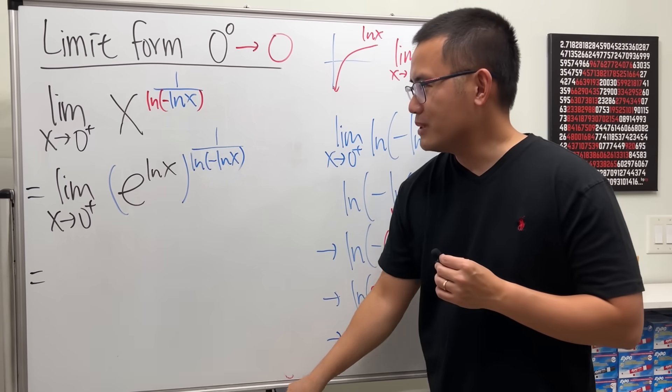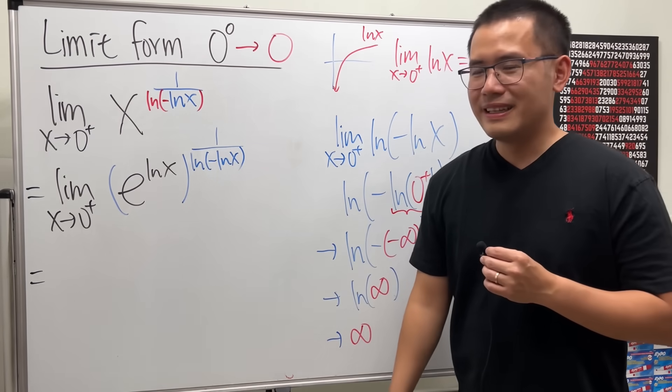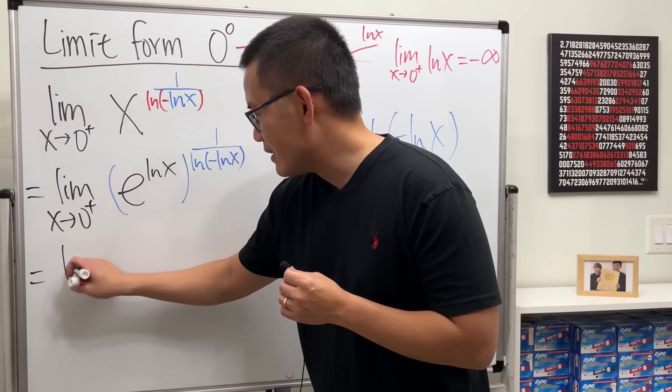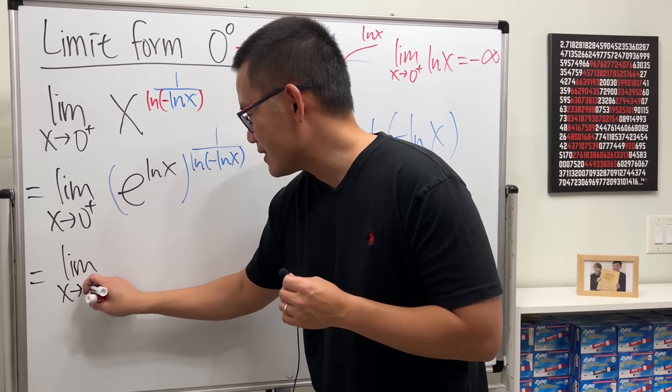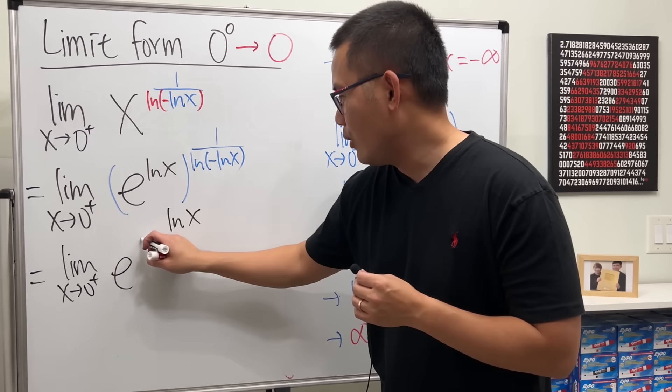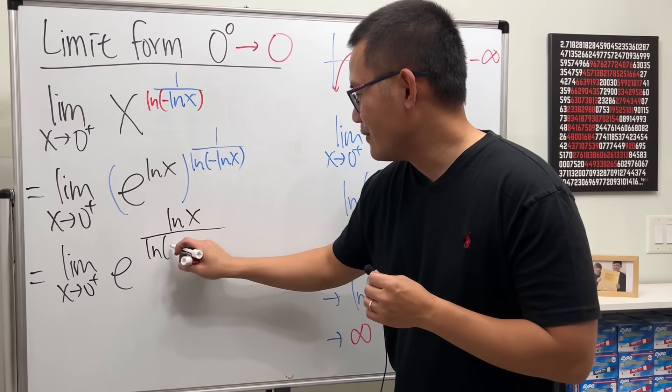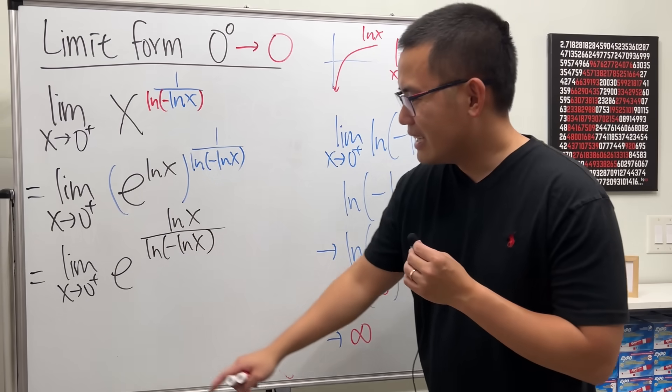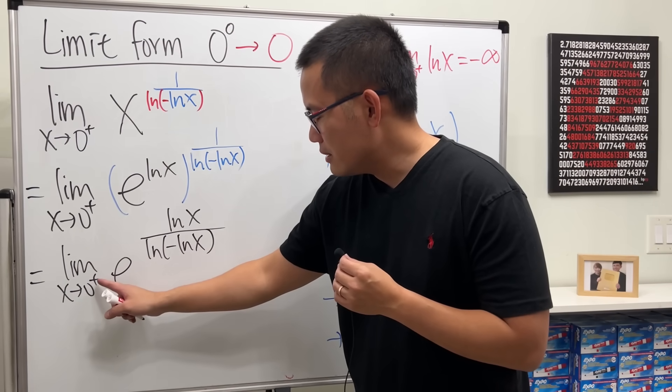And we'll still do the same thing right, x as that. Now we'll just multiply the exponents, so we have the limit as x approaching zero plus of e. And then this is lnx over ln of negative lnx power. Guess what? If x goes to zero plus...